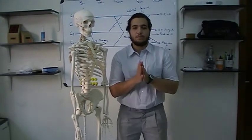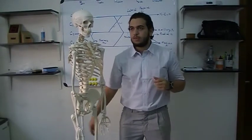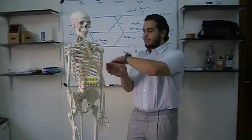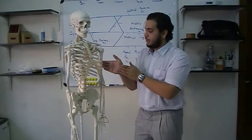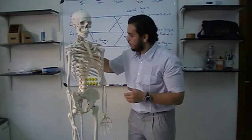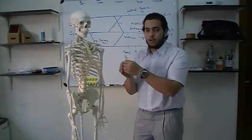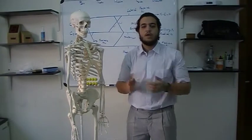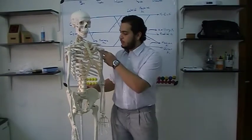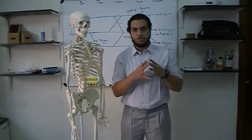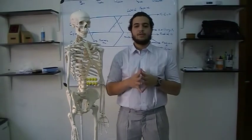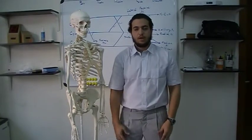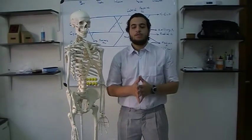Now we have the subscapularis. 'Sub' means below, so it's on the inside of the scapula. The back of the scapula from the inside has a muscle called subscapularis. If we reflect the serratus anterior, we can see the subscapularis underneath. It attaches to the lesser tubercle. It is part of the rotator cuff muscles. It's supplied by the upper and lower subscapular nerve, and it medially rotates the arm.